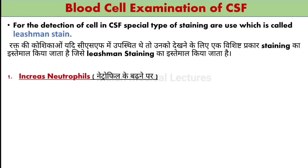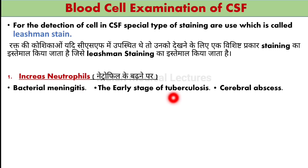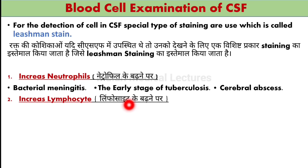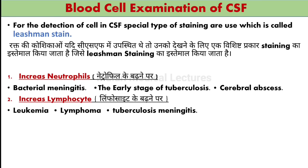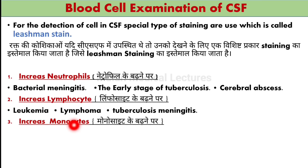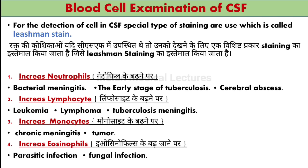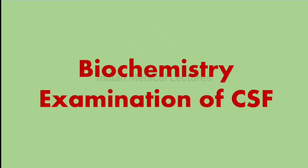Increased neutrophils indicate: bacterial meningitis or early stage of tuberculosis. Increased lymphocytes indicate: leukemia, lymphoma, or tuberculosis meningitis. Increased monocytes indicate: chronic meningitis and tumor. Increased eosinophils indicate: parasitic infection and fungal infection — similar to blood, eosinophils increase in parasitic and fungal infections. Remember these WBC differential conditions, detected using Leishman staining.